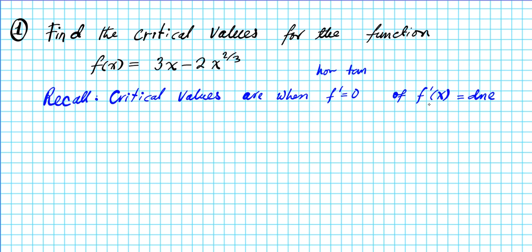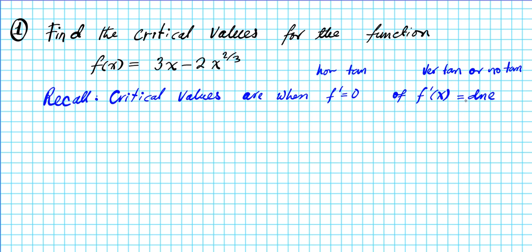The second case is when the derivative does not exist. A function is not differentiable when you have either a vertical tangent line or no tangent line at all. An easy way to remember: critical values occur when you have a horizontal tangent, a vertical tangent, or no tangent — abbreviated as 'hor-tan, ver-tan, or no-tan.'